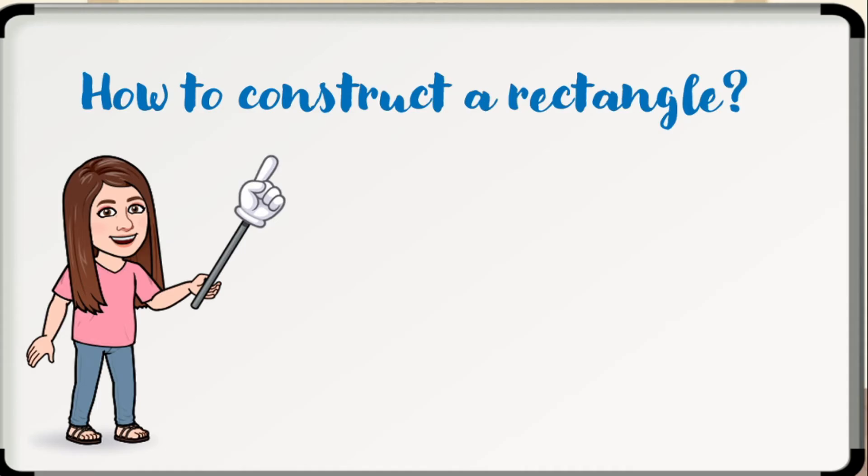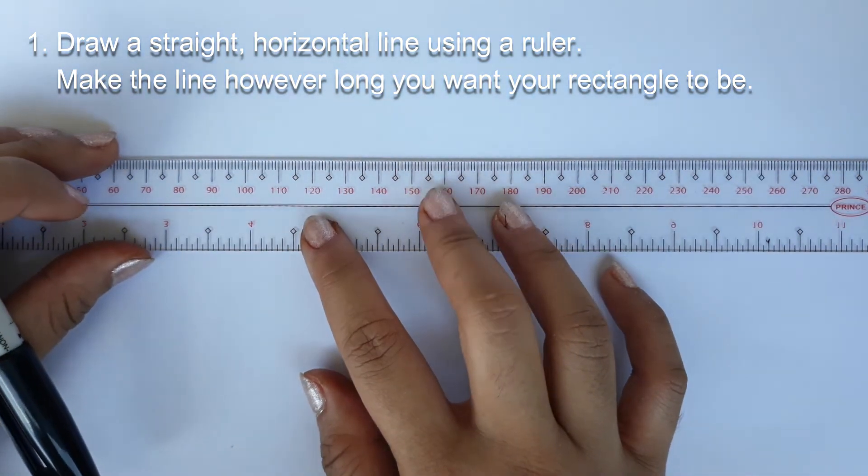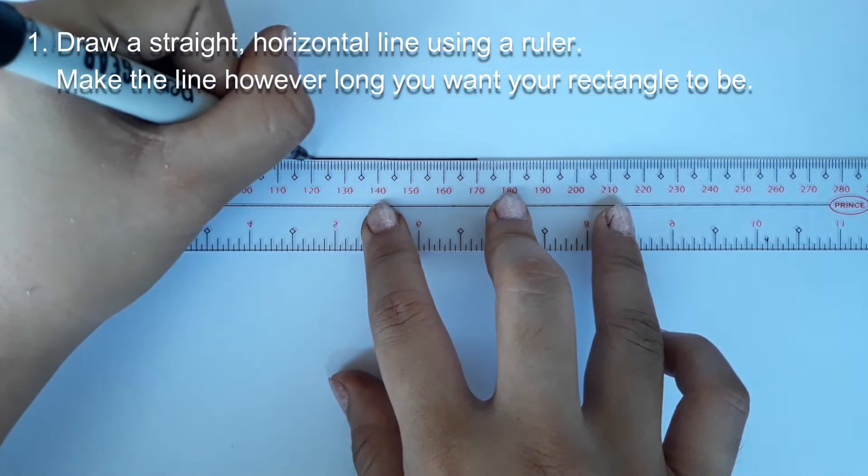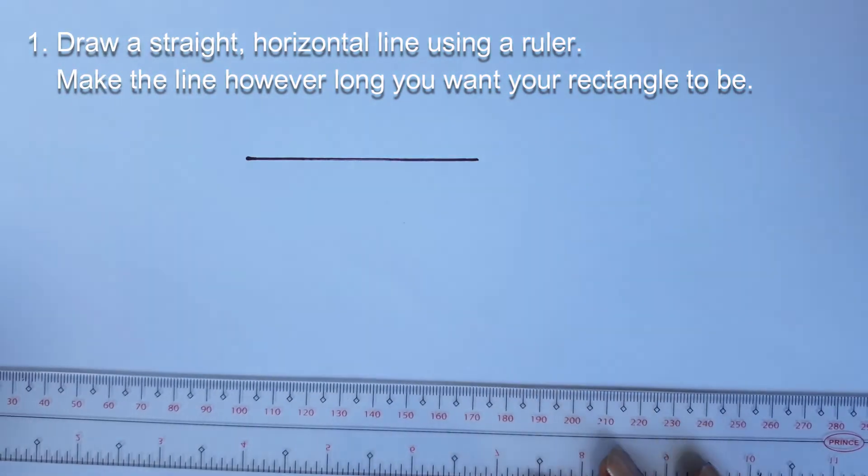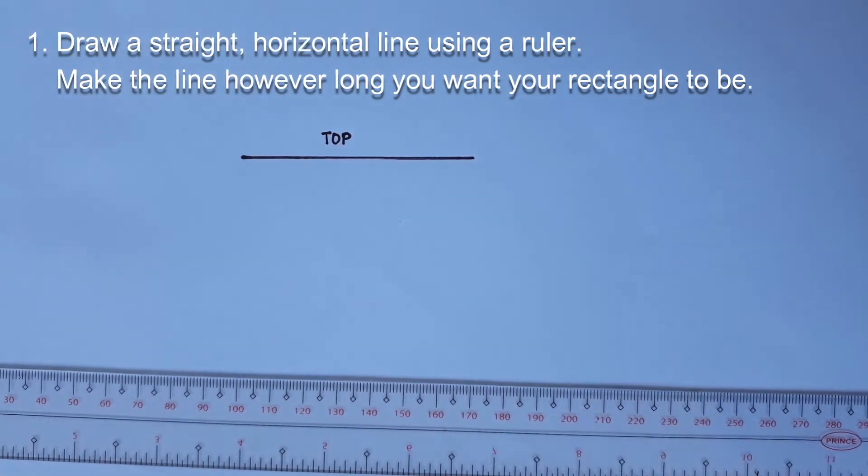How to construct a rectangle. Drawing a rectangle is simple once you know what to do. In this lesson, we will be needing a ruler, a sheet of paper, and something to draw with. Here are the steps. Number 1. Draw a straight horizontal line using a ruler. Using a ruler will help you make sure that your line is straight so that your rectangle turns out neat and even. Make the line however long you want your rectangle to be. This line will be the top of your rectangle, so draw it wherever you want the top to go.